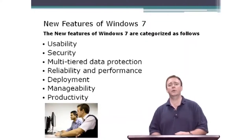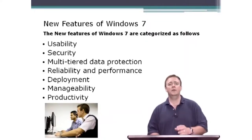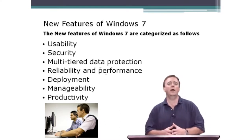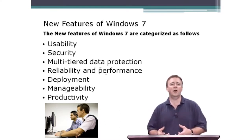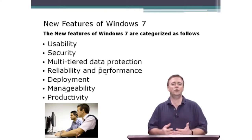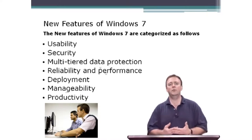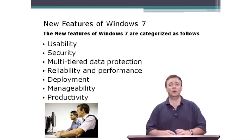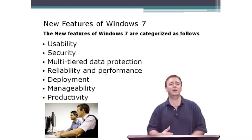First, the key features of Windows 7 — starting with usability. There are changes to the desktop, pinning things to the taskbar, being able to shake windows, new search capabilities, the ability to create searchable and indexed libraries, and federation-type searches that can go out and look at other shares and locations. Great things in the world of usability.